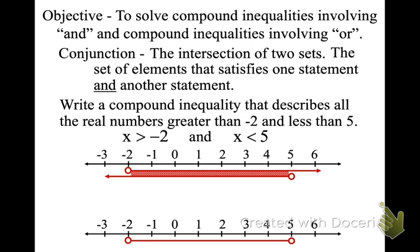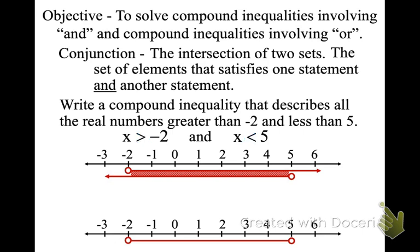We can write this as an in-between statement. We take the lower number, negative 2 — lower number always goes on the left. We say negative 2 is less than x, is less than 5. Notice: x is next to the less than here, and x is next to the greater than opening. It always goes in this direction. We call this an in-between statement.